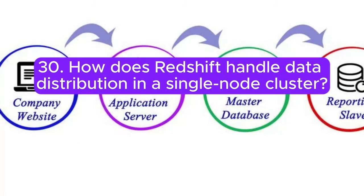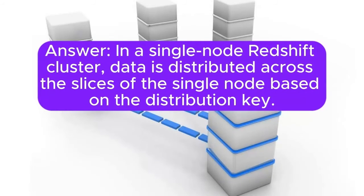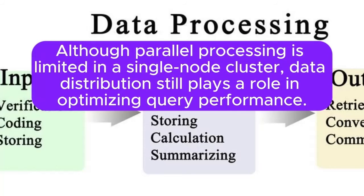Question 30: How does Redshift handle data distribution in a single-node cluster? Answer: In a single-node Redshift cluster, data is distributed across the slices of the single node based on the distribution key. Although parallel processing is limited in a single-node cluster, data distribution still plays a role in optimizing query performance.